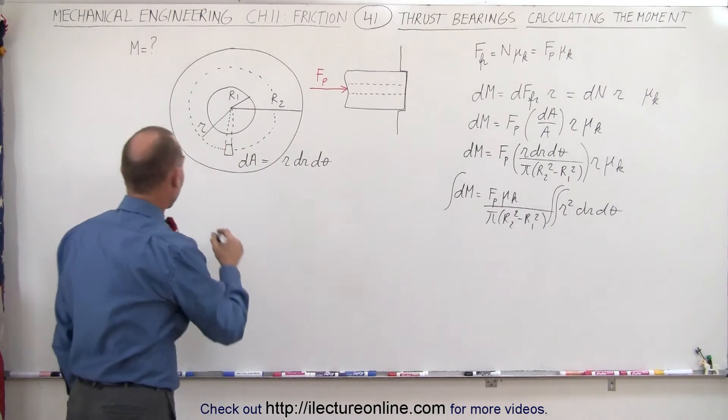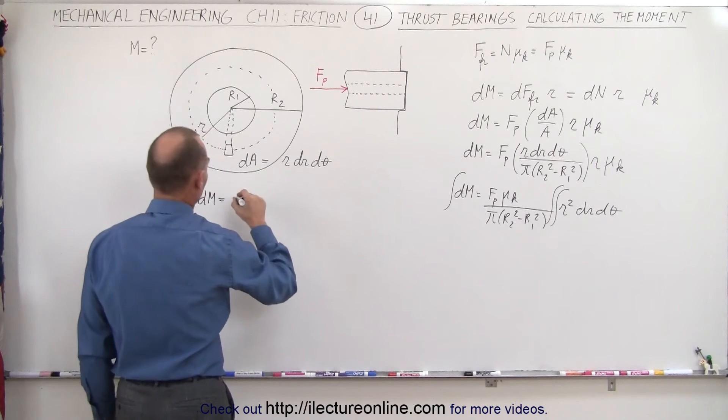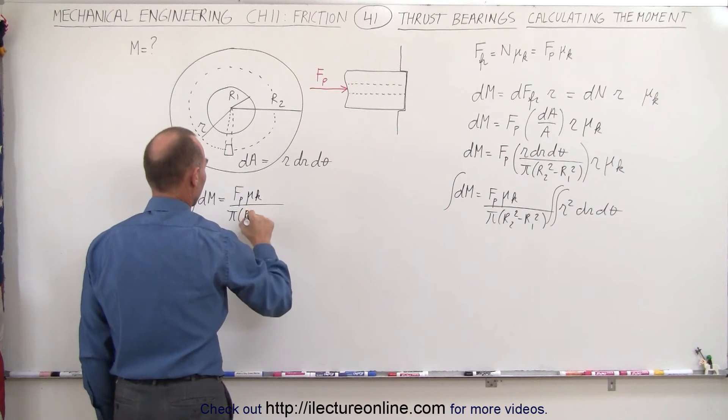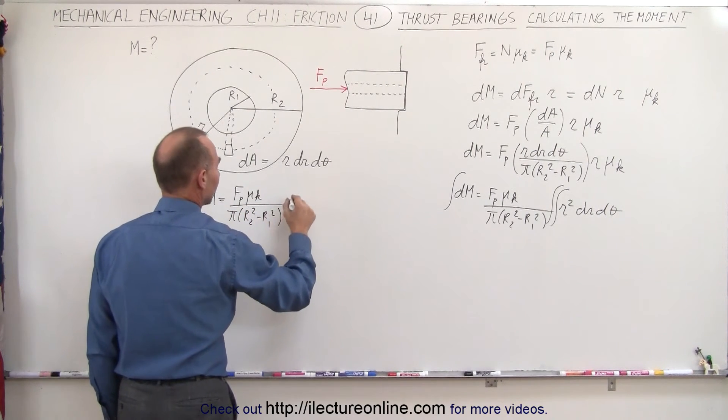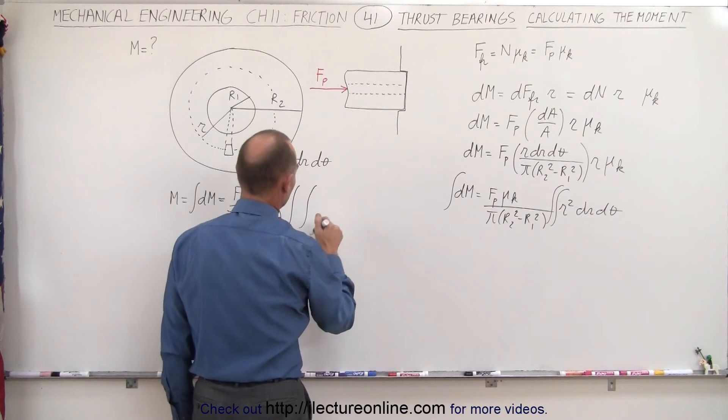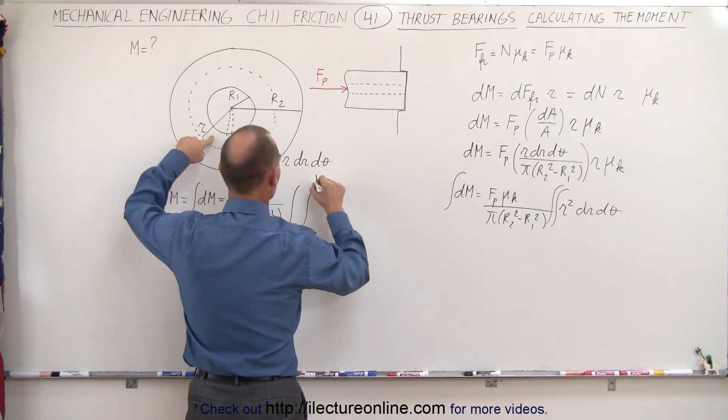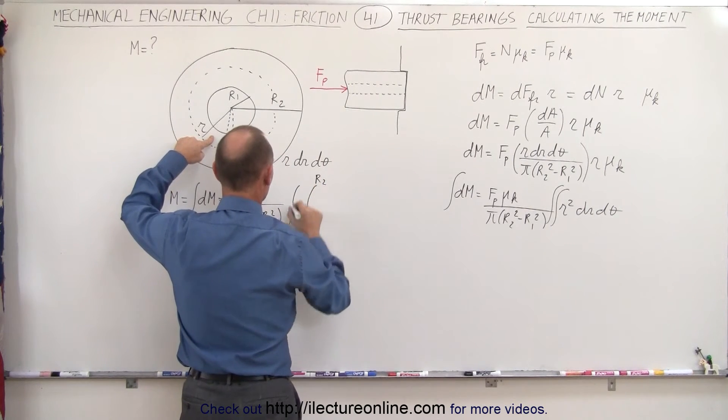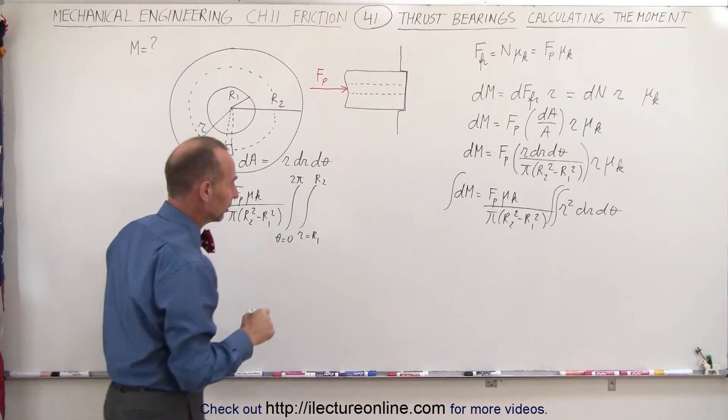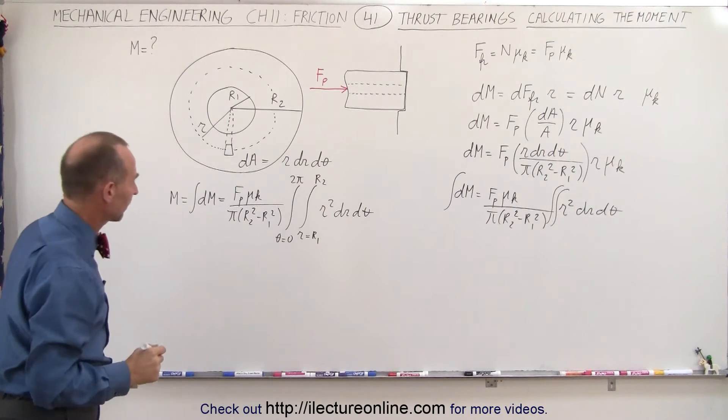So now we're ready to go ahead and integrate that. So the moment, which is equal to the integral of the dm, which is equal to the force of the push times mu sub k divided by pi r2 squared minus r1 squared times. Now we have two integrals here. The first integral is going to be for r from r1 to r2, and then theta is going to be from 0 to 2 pi. So we're going to integrate from r1 to r2 in radius, and from 0 to 2 pi in circumference of the circle. And that would be r squared dr d theta.